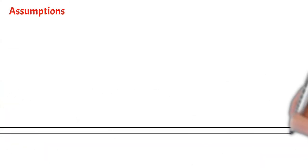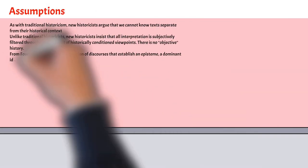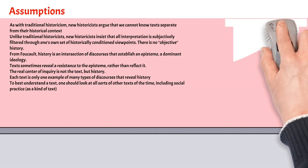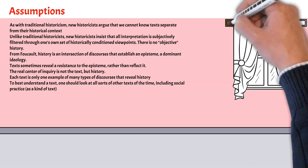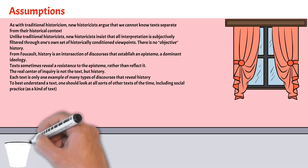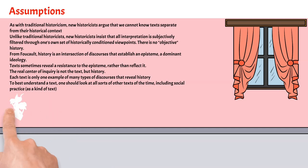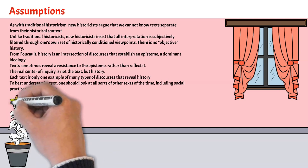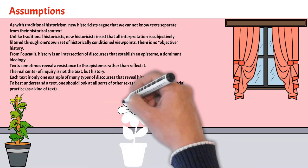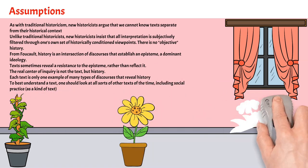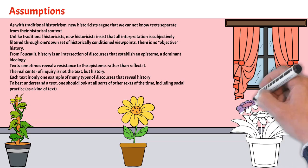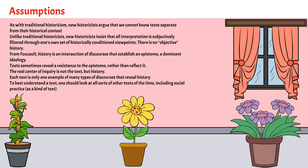Now some of its major assumptions: as with traditional historicism, new historicism argues that we cannot know texts separate from their historical context. Unlike traditional historicists, new historicists insist that all interpretation is subjectively filtered through one's own set of historically conditioned viewpoints. There is no objective history.